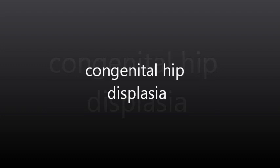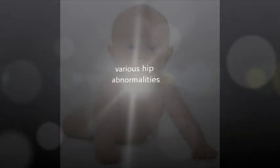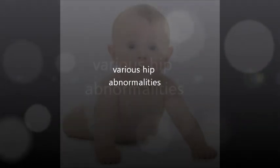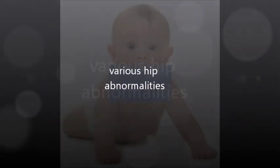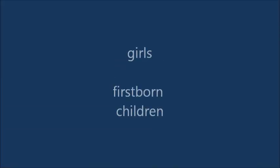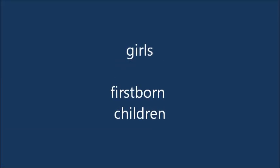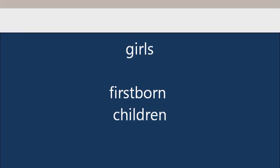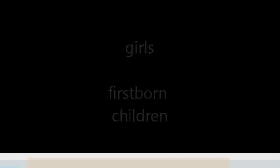Hip dysplasia is the term used to describe one of the various abnormalities of the hip in children. It tends to run in families and can present in either hip in any individual. It is most usually seen in girls and first-born children. There is not an exact known cause of hip dysplasia; however, there are several factors that can contribute to developing this condition.